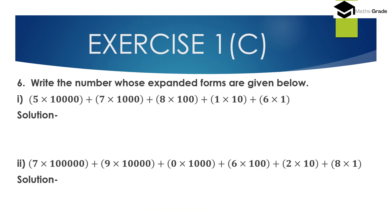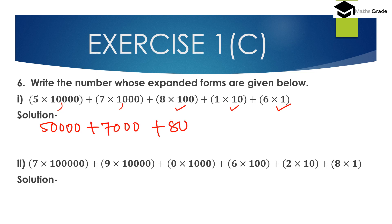Question number 6: write the number whose expanded forms are given below. First: 5 × 10,000 + 7 × 1000 + 8 × 100 + 1 × 10 + 6 × 1. So the number whose expanded form is 5 × 10,000 + 7 × 1000 + 8 × 100 + 1 × 10 + 6 × 1 is 57,816.